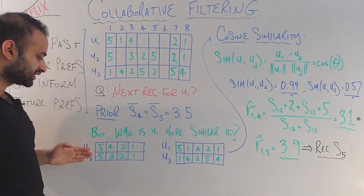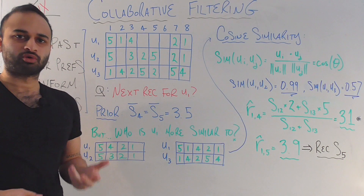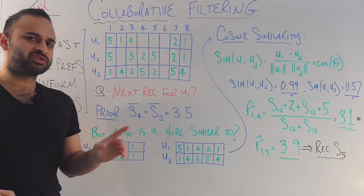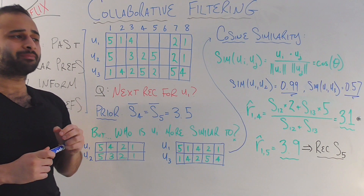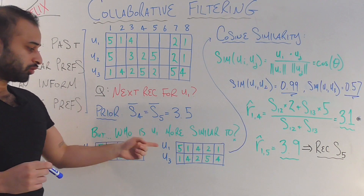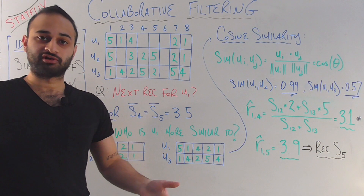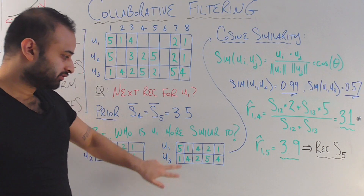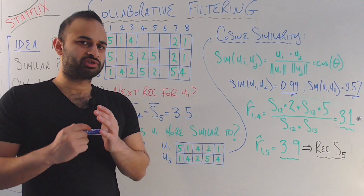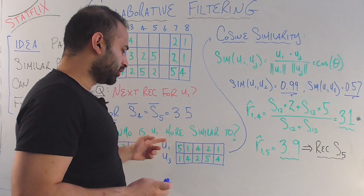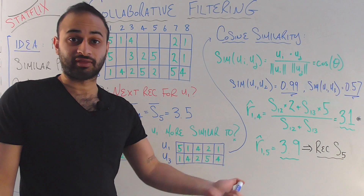Looking at U1 and U2, their preference lists are very similar — the only real difference is a four versus three, which are close together. This suggests U1 and U2 rank content very similarly, meaning if U2 likes something, U1 might too. Now comparing U1 and U3: they share five pairs, but a five versus one, one versus four, four versus two, two versus five, four versus one — these two users don't agree on much. So U1 and U3 are not very similar.